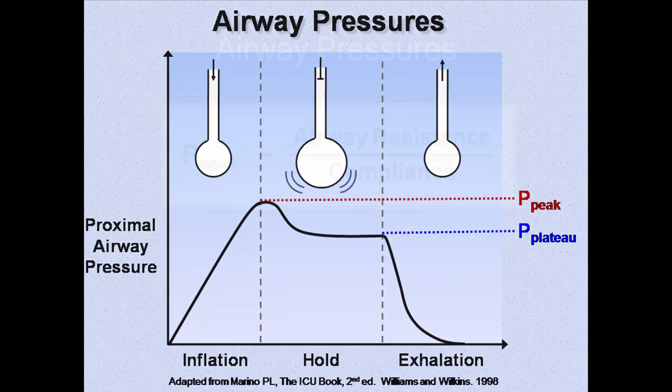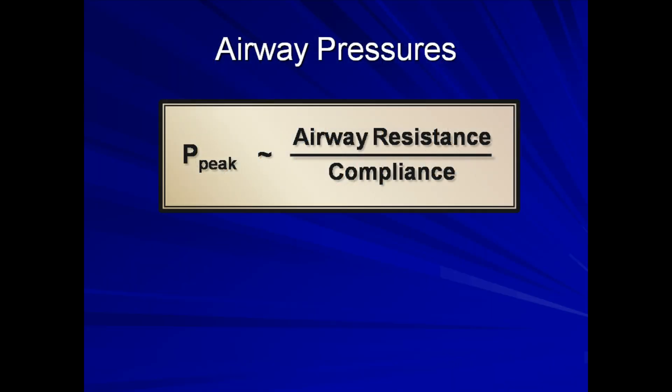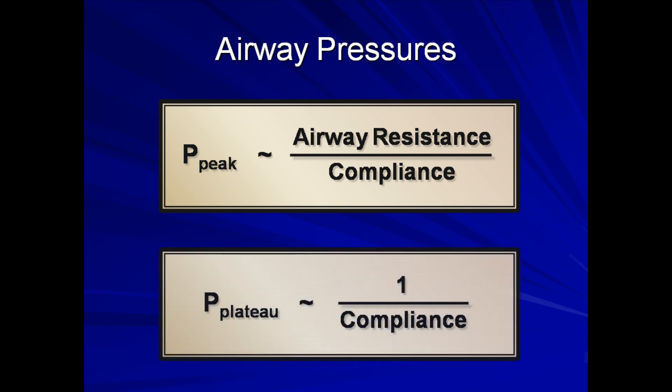Peak pressure is proportional to airway resistance and inversely proportional to compliance, while plateau pressure is inversely proportional to compliance and independent from resistance. Therefore, peak pressure can be increased by either increased airway resistance or decreased compliance, while plateau pressure can only be increased by decreased compliance. If peak pressure is elevated and plateau pressure is not, it is highly suggestive that the patient's airway resistance is unusually high.